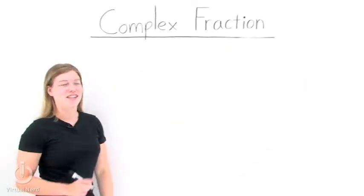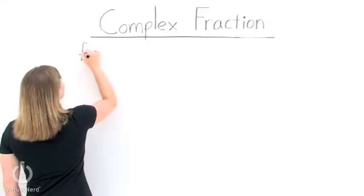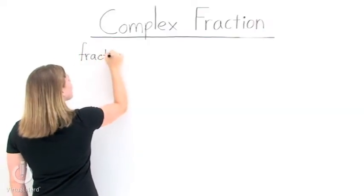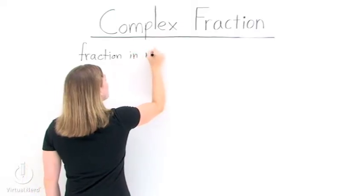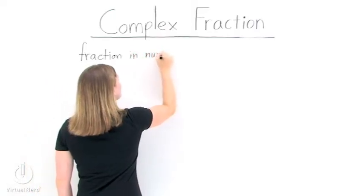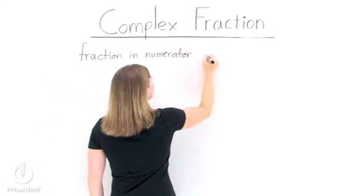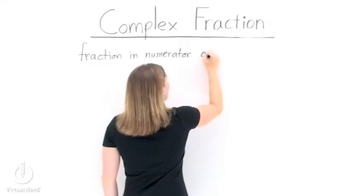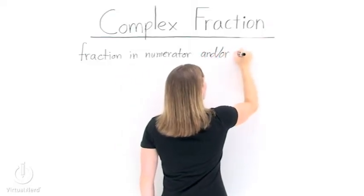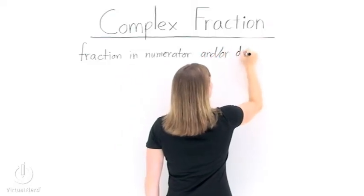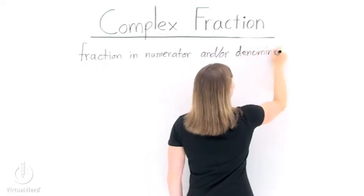What is a complex fraction? A complex fraction is a fraction that contains another fraction. This fraction could be in the numerator of the complex fraction, it could be in the denominator of the complex fraction, or we could have a complex fraction that has a fraction in both the numerator and the denominator of the fraction.